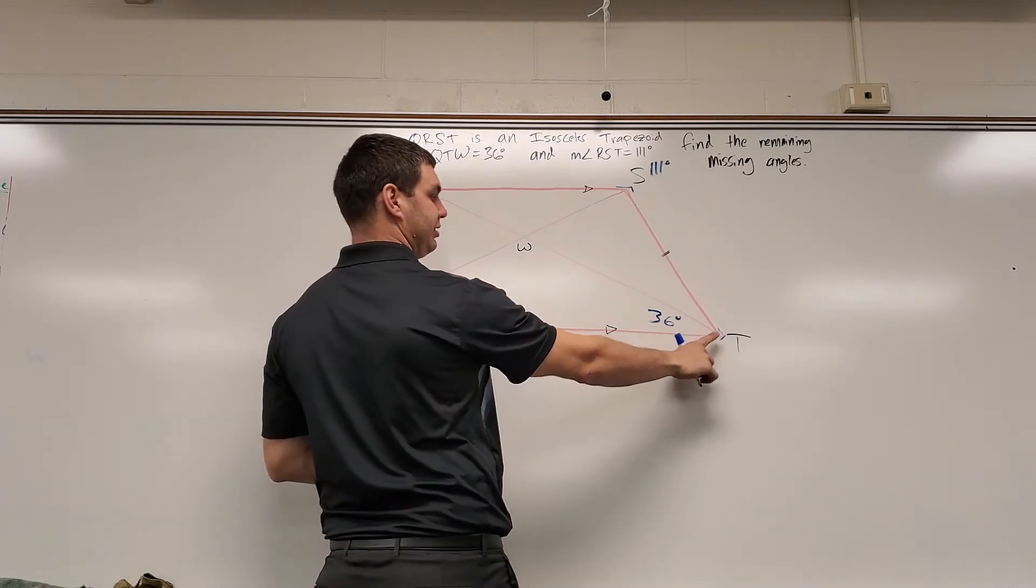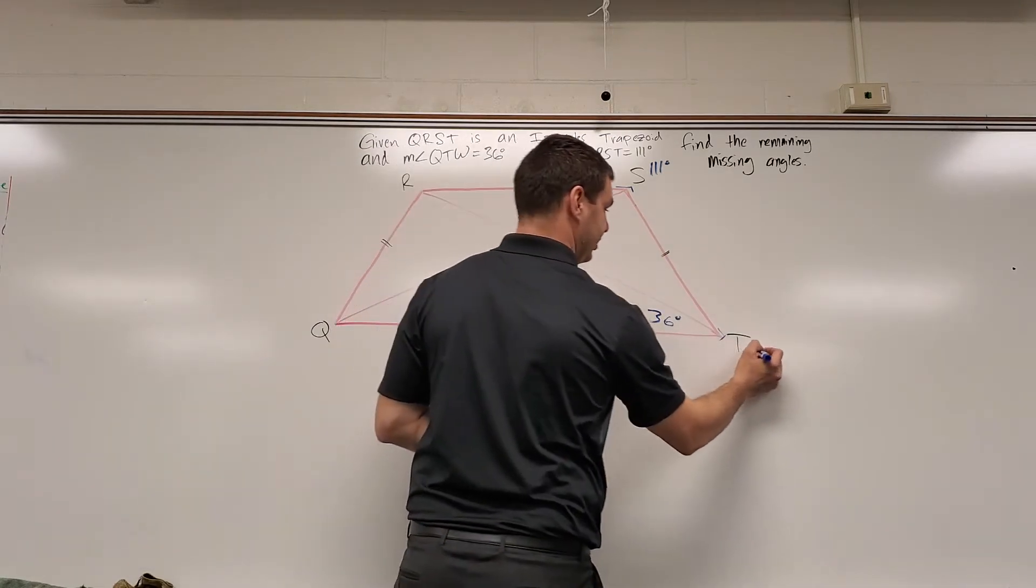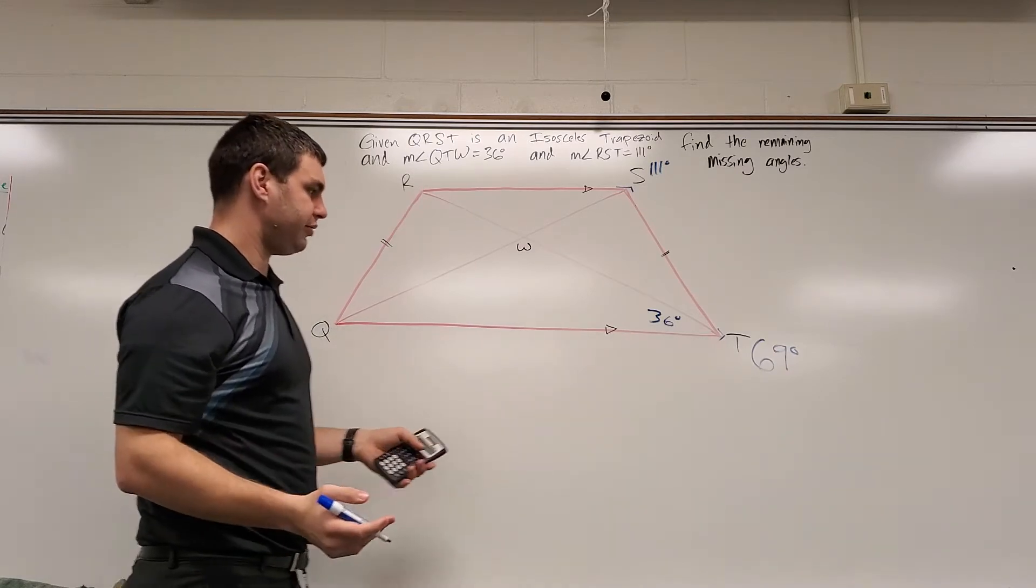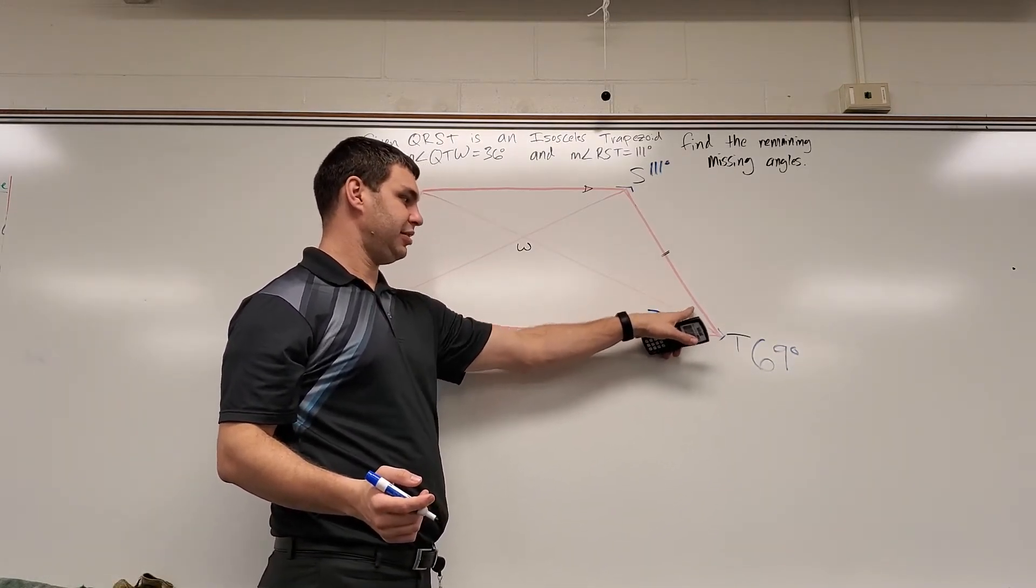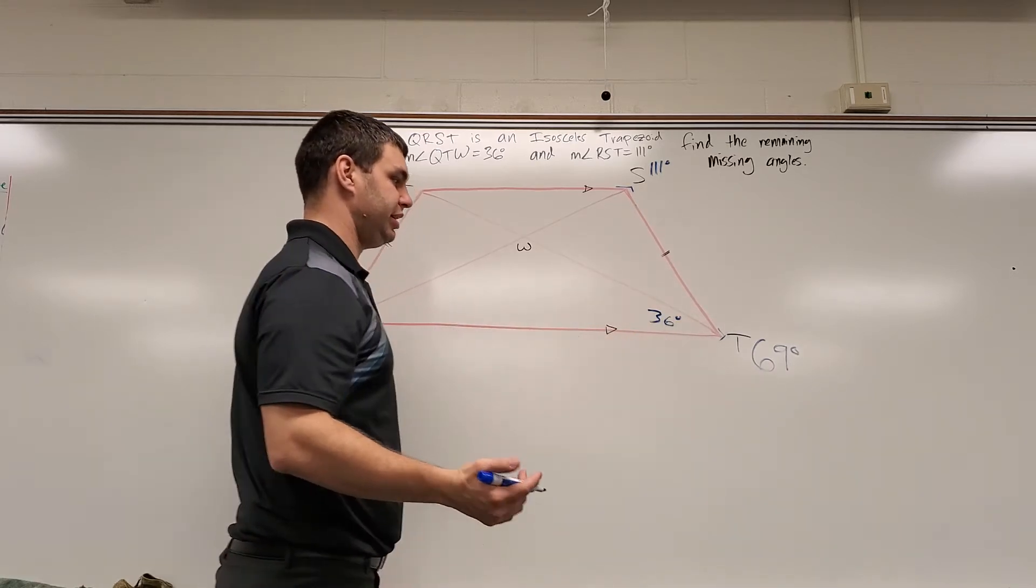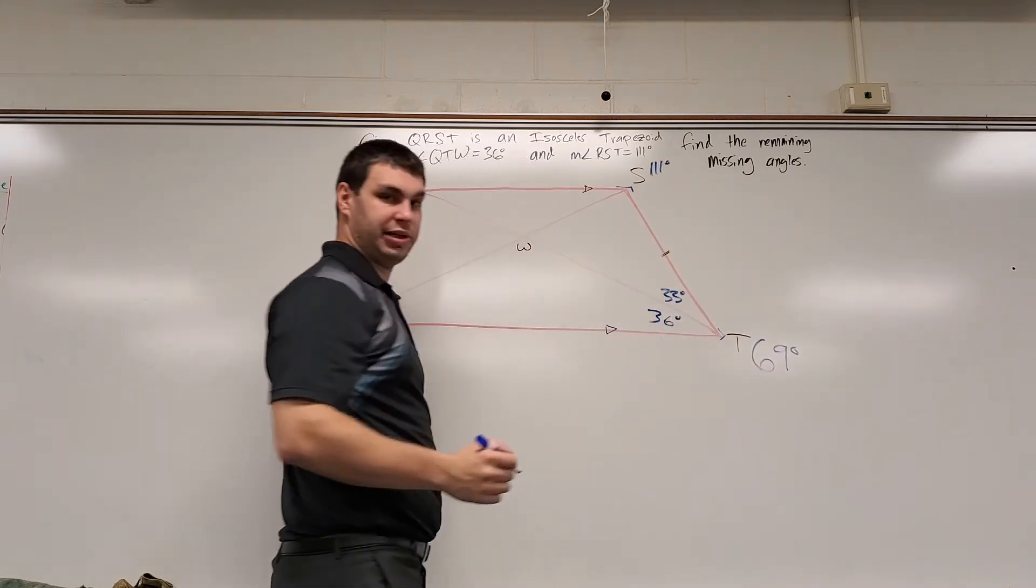And so I know that 69 plus 111 would give me 180. So I can say that measure T is 69 degrees. That's also helpful because if 69 is made up of this 36 and this angle, I can take 69 and subtract 36, which is 33 degrees. So I know right away that that's 33 degrees.